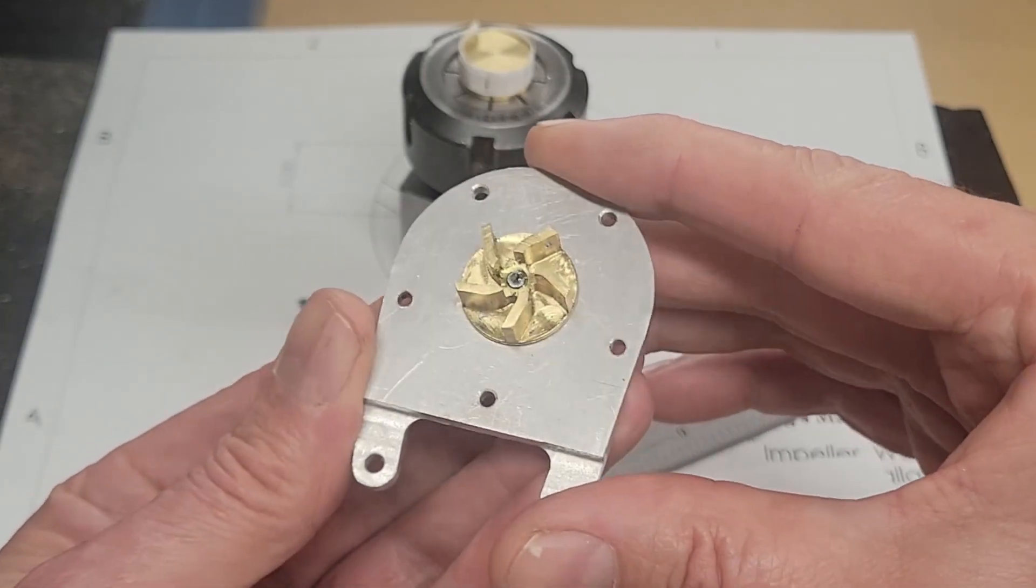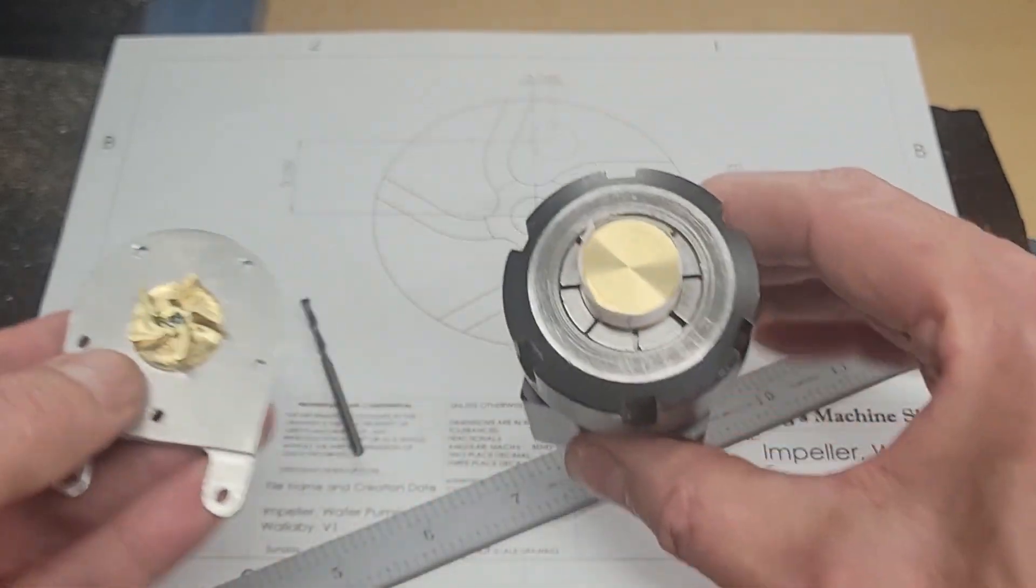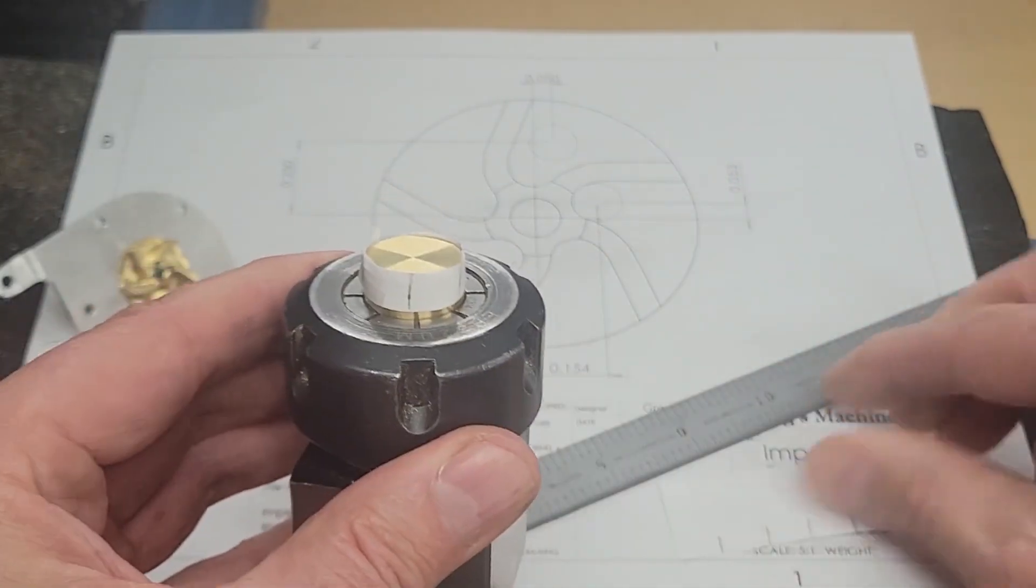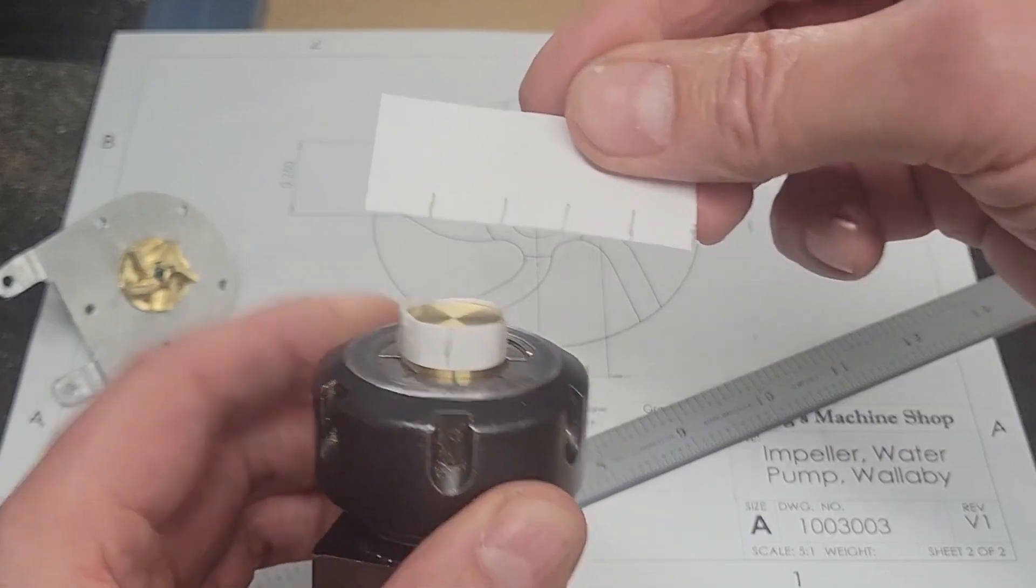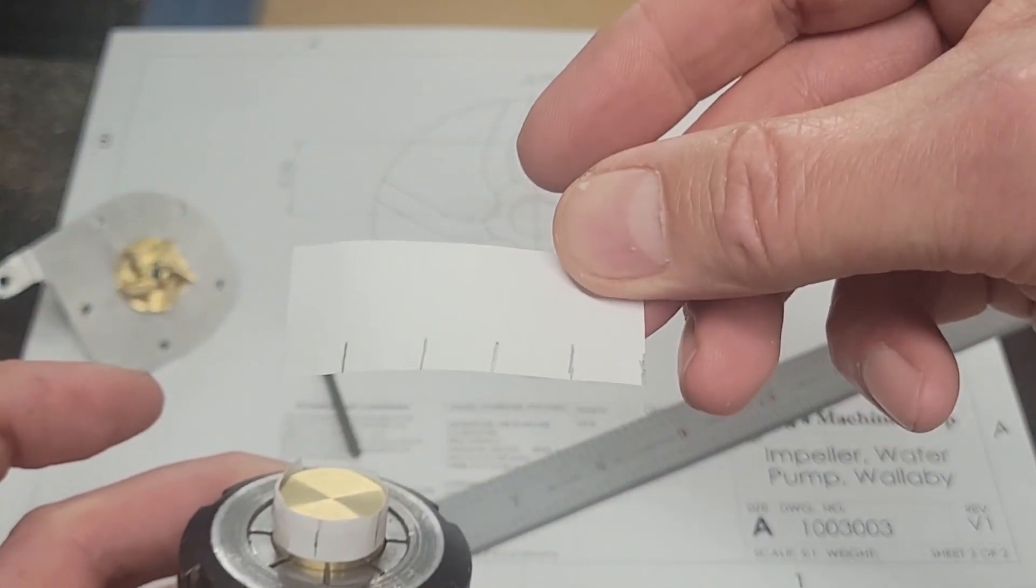How do we machine this impeller? Well, there's five blades. The first thing we want to do is take our stock. I took a strip of paper, measured it around the circumference, divided it into fives,